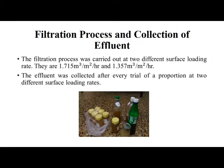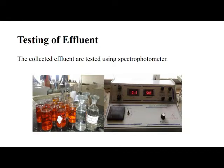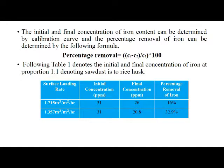Filtration process and collection of effluent: The filtration process was carried out at two different surface loading rates — 1.715 m³/m²/hour and 1.357 m³/m²/hour. The surface loading rate was changed according to the size of the influent hole. The effluent was collected after every trial at two different surface loading rates and tested using a spectrophotometer at a wavelength of 508 nanometers. The percentage removal is calculated as: (C1 − C2) / C1 × 100, where C1 is initial concentration and C2 is final concentration.